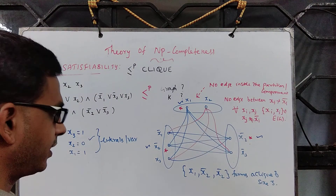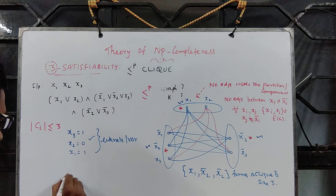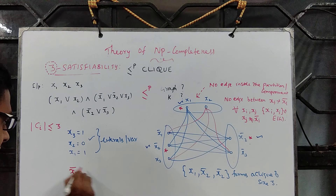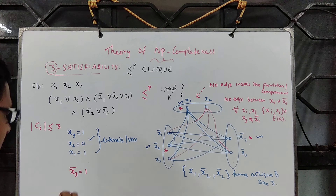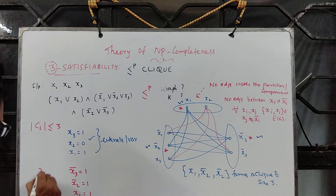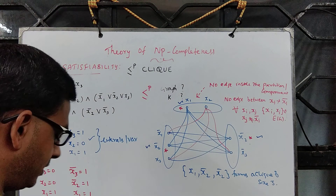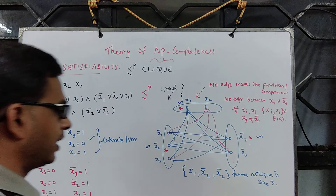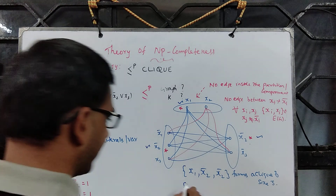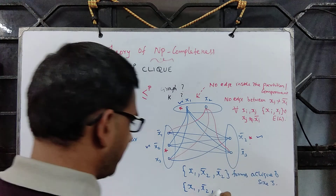Let us continue this discussion. Suppose we look at a different truth assignment. For example, one can set x3 bar to 1 — that is what I initially marked. Then x2 bar to 1 and x1 to 1, which means x3 is 0 and x2 is 0, x1 is 1. Here is an assignment that is ensuring it is evaluated to true. Now look at those vertices — you pick x1, pick x2 bar, and pick x3 bar from this.